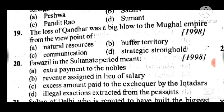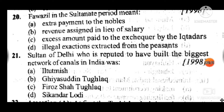Question 20: Puzzle in the Sultanate period meant — answer to question 20 is C: excess amount paid to the extra door. Question 21: The Sultan of Delhi who is reputed to have built the biggest network of canals in India was — answer to question 21 is C: Firoz Shah Tughlaq.